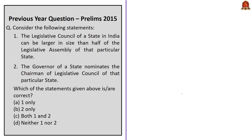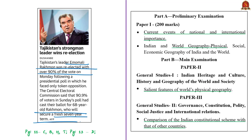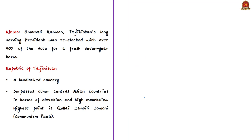The next news article talks about the recently held presidential election in Tajikistan. Emomali Rahmon's son, Tajikistan's long-serving president's son, was re-elected with more than 90% of the vote for another term of seven years. In this context, let us discuss information pertaining to Tajikistan. Tajikistan, officially called the Republic of Tajikistan, lies in the heart of Central Asia. It is one of the five Central Asian countries.